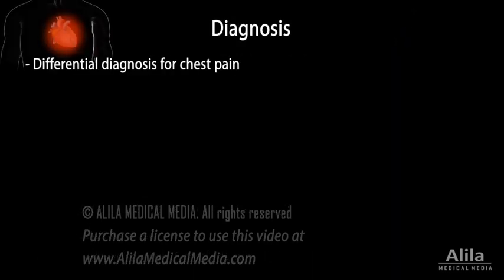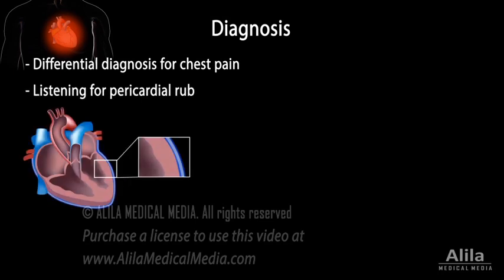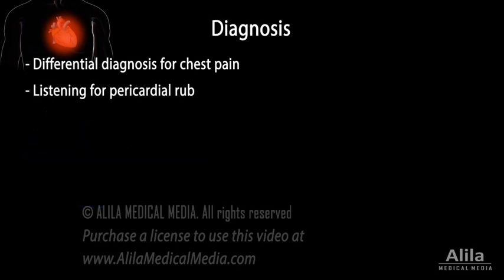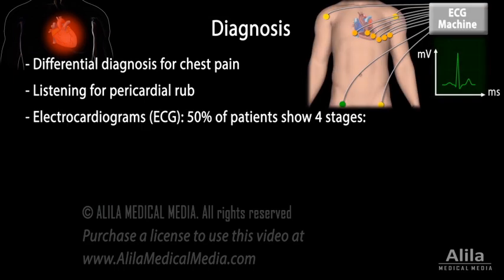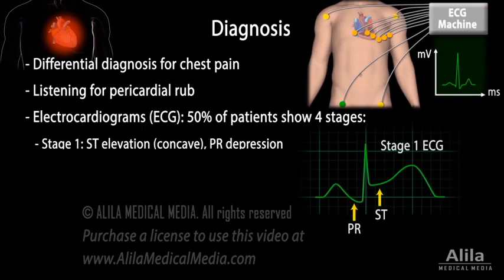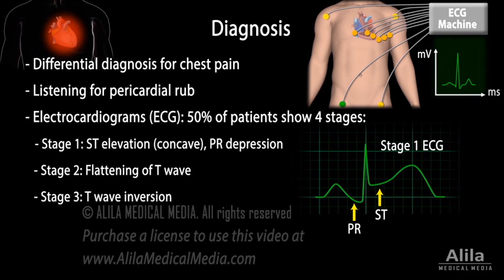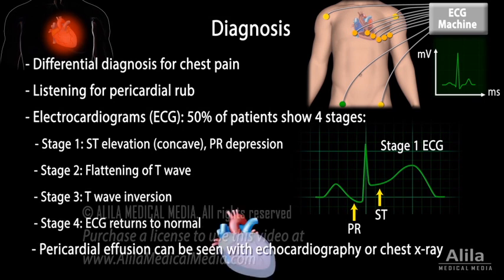Diagnosis can usually be made based on evaluation of chest pain and presence of pericardial rub, a characteristic sound produced when pericardial layers rub against each other. But tests are commonly performed to confirm and to exclude heart attack. In about half of patients, electrocardiograms show changes that go through a characteristic sequence of four stages. Pericardial effusion, if present, can be seen with echocardiography or chest x-ray.